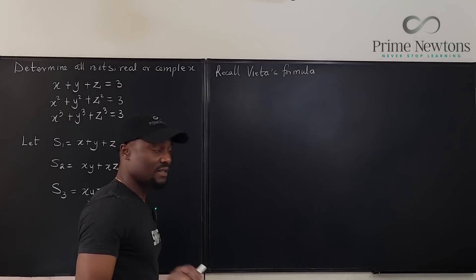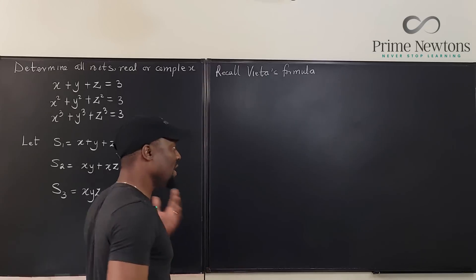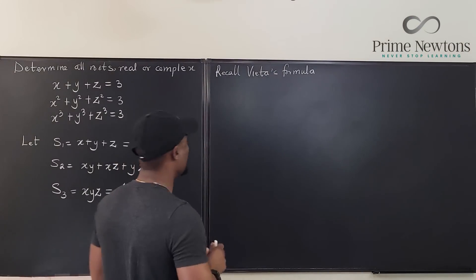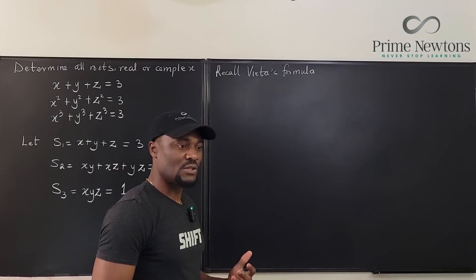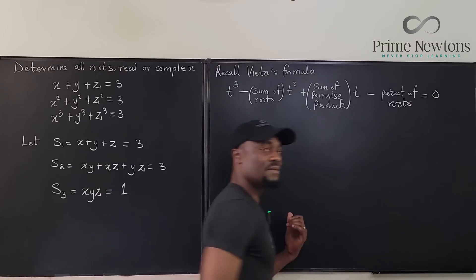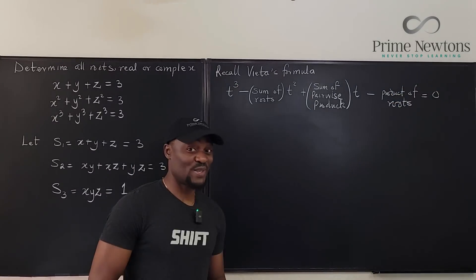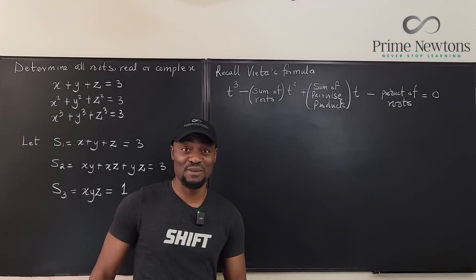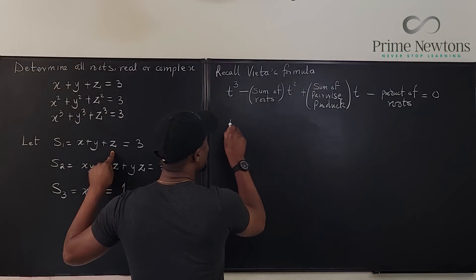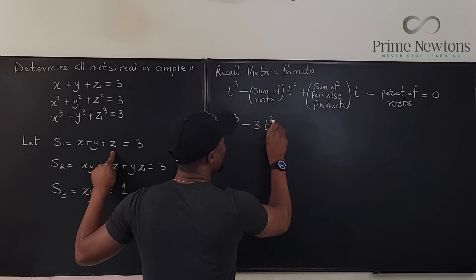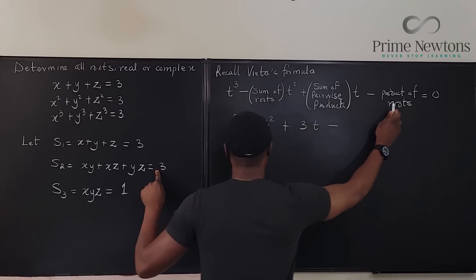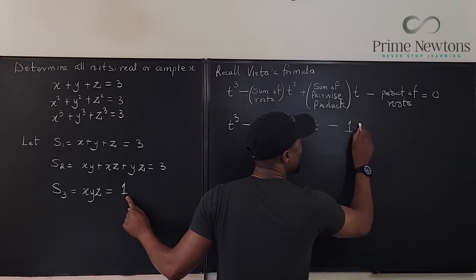Vieta's formula tells us that for a cubic polynomial in t with roots x, y, z: t³ − S1·t² + S2·t − S3 = 0. Plugging in our values: t³ − 3t² + 3t − 1 = 0.